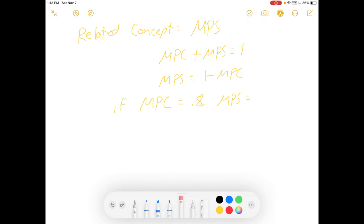An example would be if your MPC is 0.8, your MPS would be 1 minus 0.8, which is just 0.2, suggesting that you save 20% of your income, which makes sense if you're spending 80% of it.